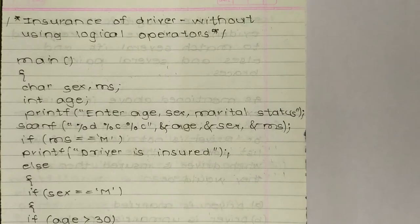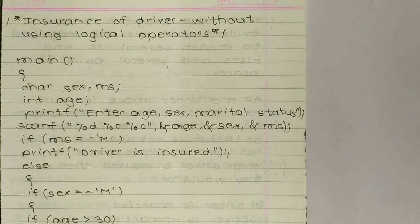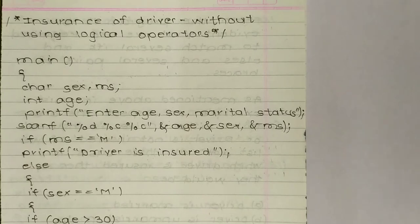First is main(), a compulsory function used in every program. Opening bracket, then: char scx, ms — so scx and ms are characters. Then int age — age is an integer. In these first two lines we are defining characters and integers. Then printf to ask the user to enter age, sex, and marital status.